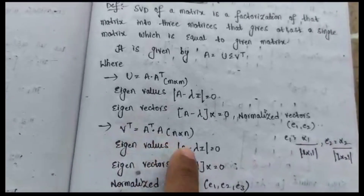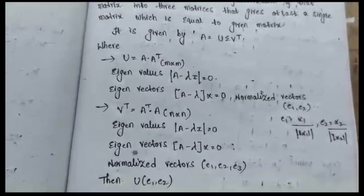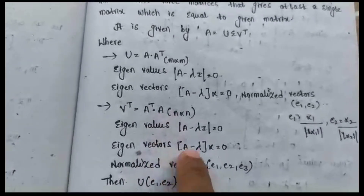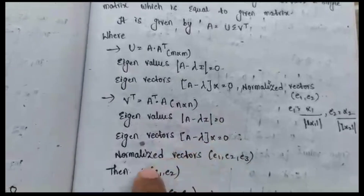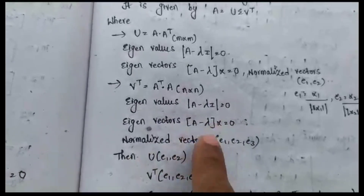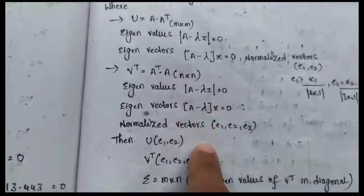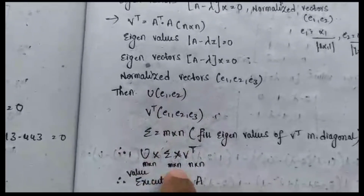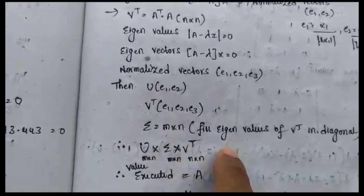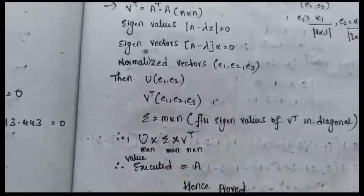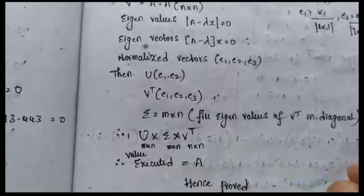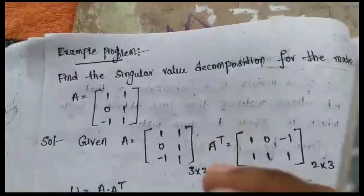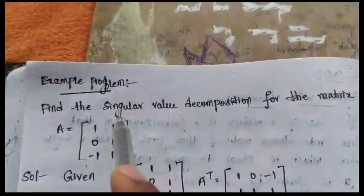Similarly, Vᵀ equals Aᵀ times A, which is an n×n matrix. We also find the eigenvalues, eigenvectors, and normalized vectors for Vᵀ. Then we substitute all values of U, Σ, and Vᵀ to get a single matrix equal to A.